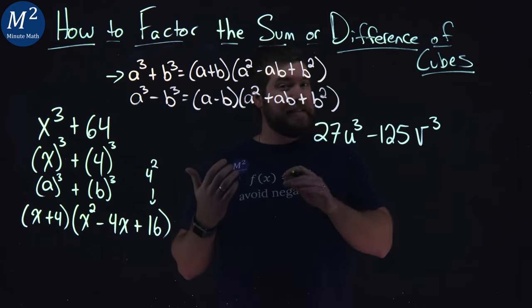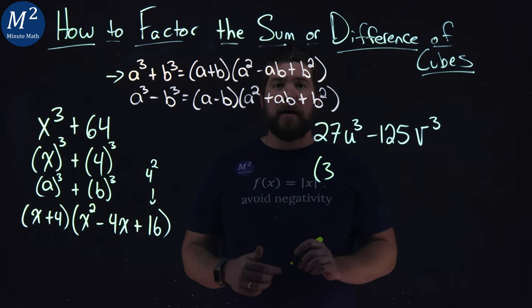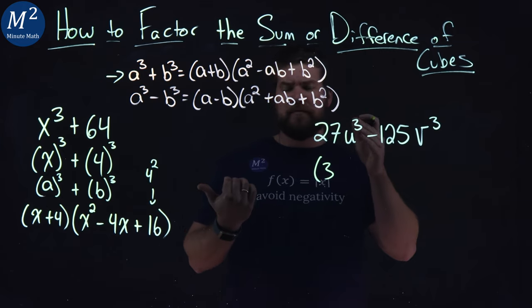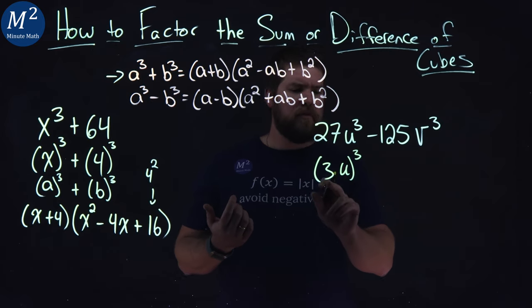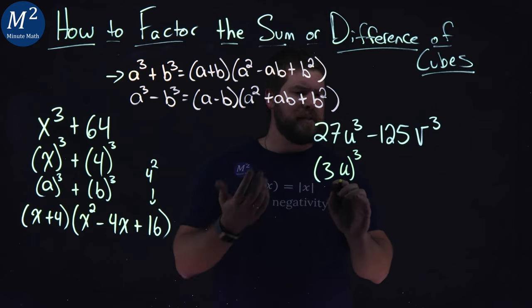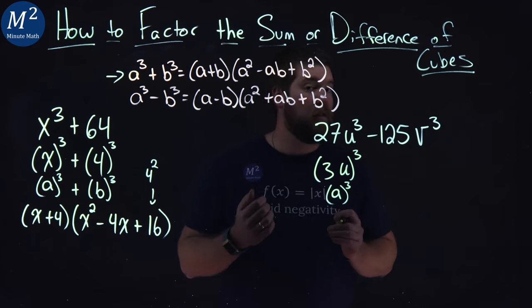Well 27 the cube root of 27 is a 3. So we know 3 can go right here. And well cube root of u cubed is u. And so 3u all cubed is our well a value all cubed. A value being 3u.